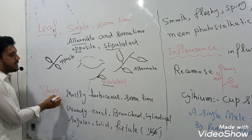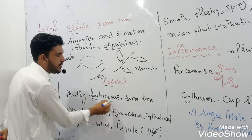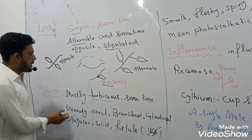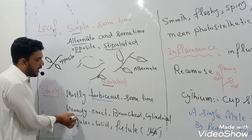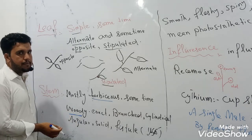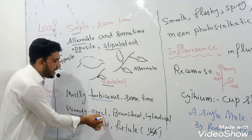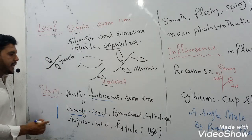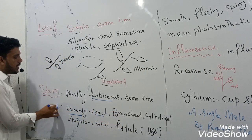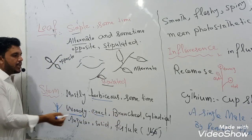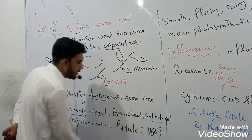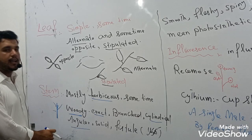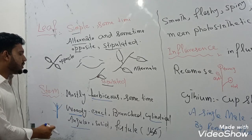Now coming to the stem: the stem is mostly herbaceous, which can easily be broken by hand. Sometimes there are woody trees found in tropical regions. There are erect straight stems with different branches arising from the erect stem. Some members have a cylindrical stem, and some members have an angular stem which forms a specific angle with their branches.